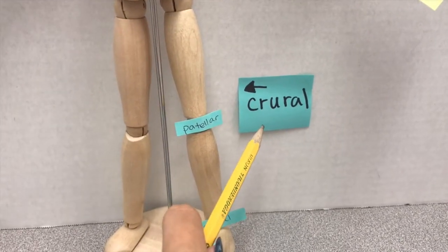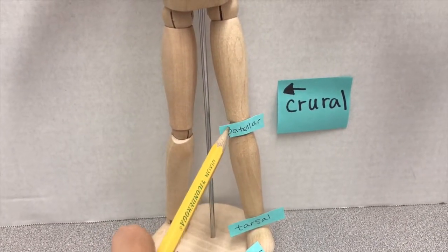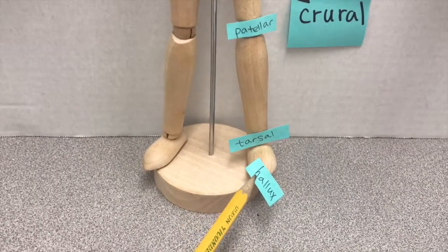And then going into crural (leg), we have patellar (anterior knee), tarsal (ankle), and hallux (big toe).